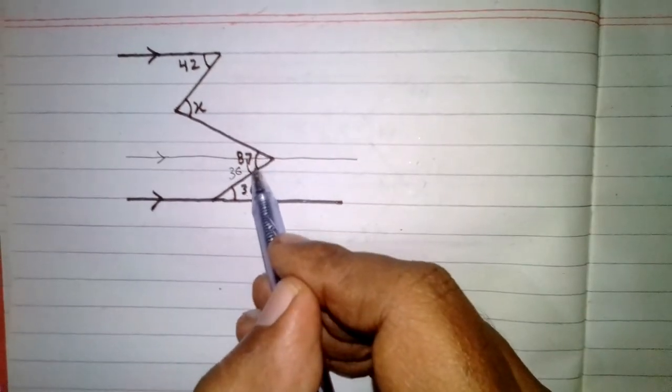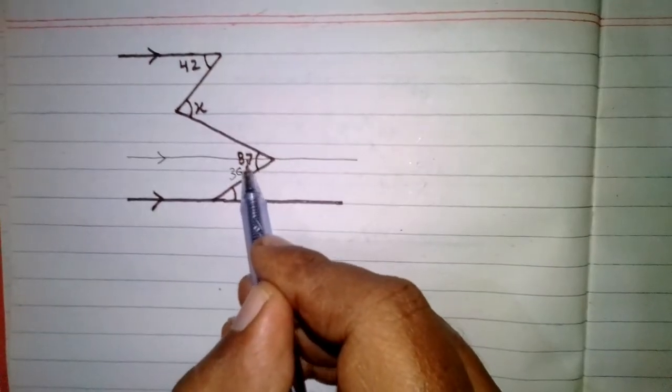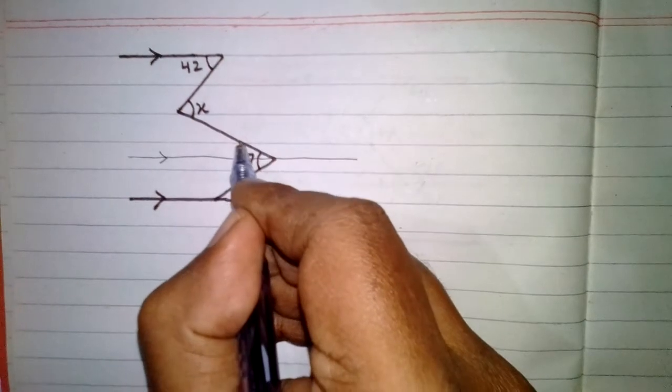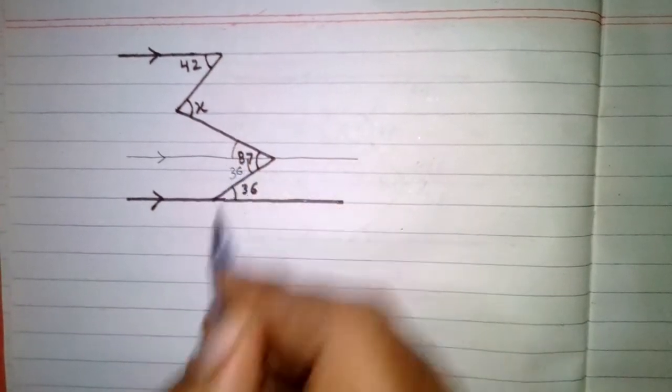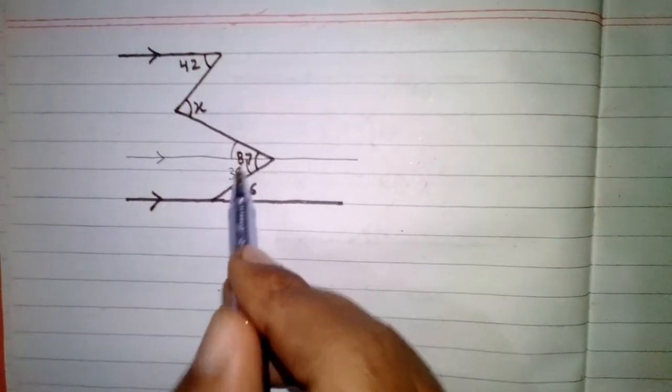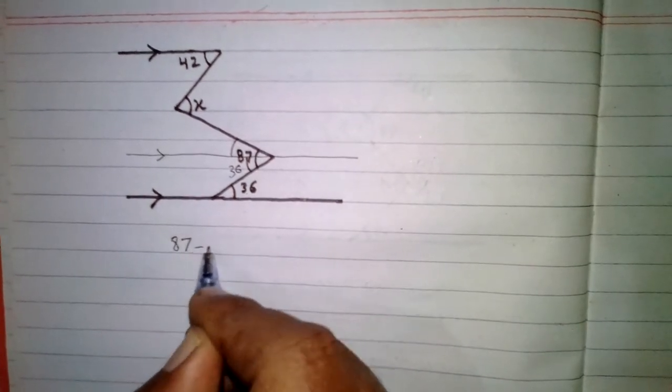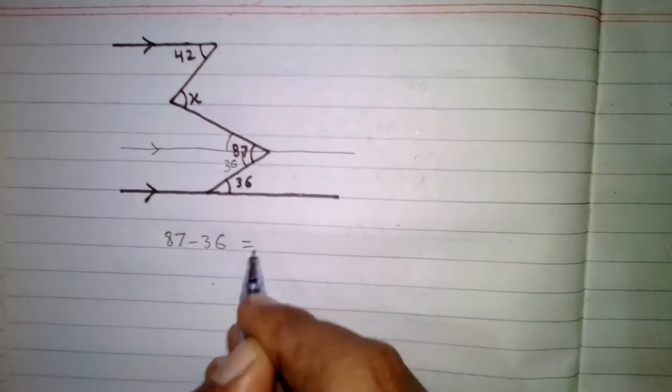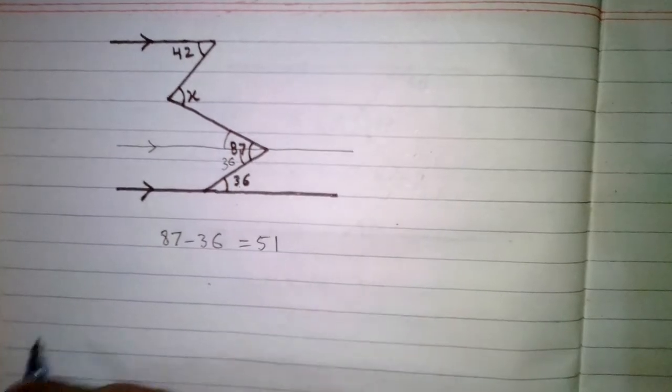Now this whole angle is 87 and this part is 36, so we can find this part by subtracting 36 from 87. So 87 minus 36 is equal to 51.